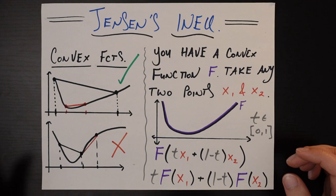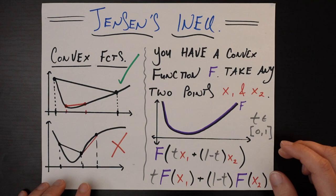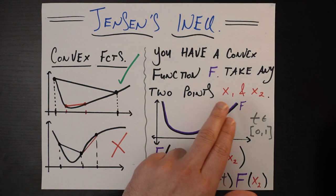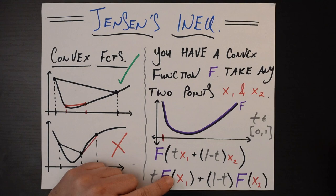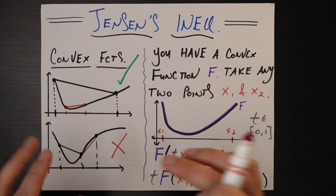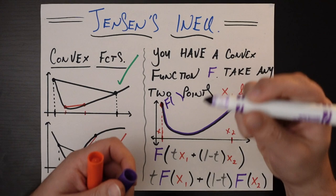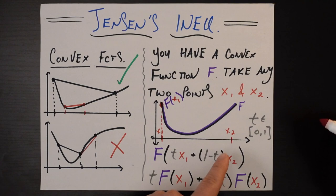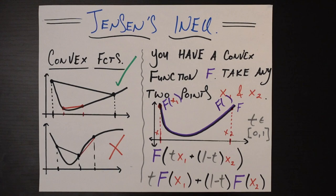Now we get into the actual meat — the actual definition of Jensen's inequality — which unsurprisingly starts with the definition we just learned. You start with some convex function f. Just like in the definition of a convex function, take any two points x1 and x2 on the x-axis. I've drawn a little diagram here. Let me choose a point x1 here and x2 here. The first thing I want to do is trace these two points up to their values on the function: f of x1 and f of x2.